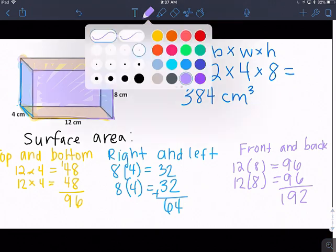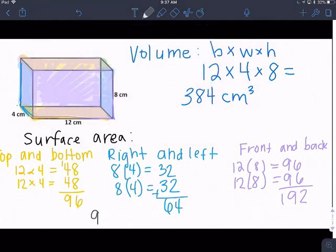So now, we need to take all of those numbers and add them together. So I have 96 plus 64.